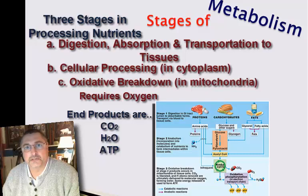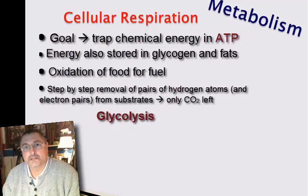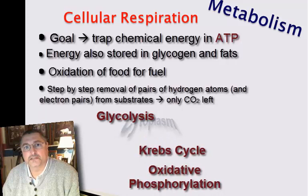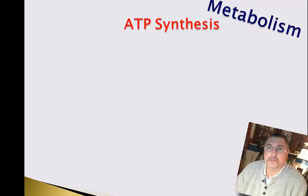Let's recap cellular respiration. The goal of cellular respiration is to trap chemical energy in ATP molecules, using either stored materials such as fats and glycogen, or foodstuffs taken in through the diet. The cellular reactions associated with cellular respiration are glycolysis, the Krebs cycle, and oxidative phosphorylation. Glycolysis occurs in the cytoplasm; the Krebs cycle and oxidative phosphorylation occur in the mitochondria. The ultimate goal of cellular respiration is to produce ATP.